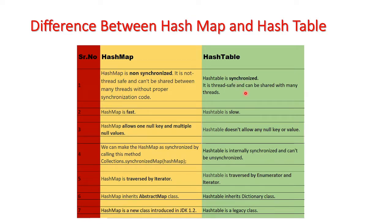The second difference is that HashMap is fast. Since HashMap is non-synchronized, multiple threads can work on it at the same time, which is why it is fast. In HashTable, since it is thread-safe, only one thread can operate at a time, so HashTable is slow as compared to HashMap.